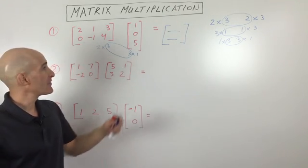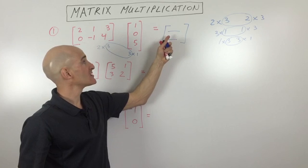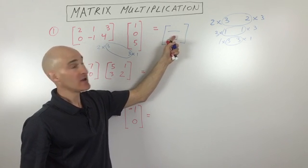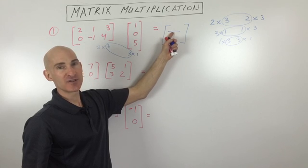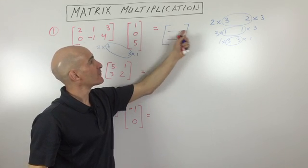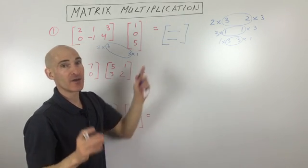And what I like to do, and I think this makes it a little bit easier for students, is if you actually work backwards. You draw your solution matrix here, your final matrix, and you say, what position is this in? It's in the first row, first column. That tells you what to do.